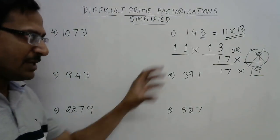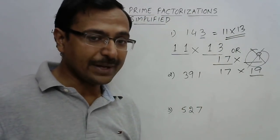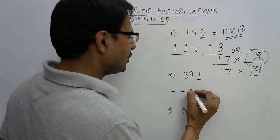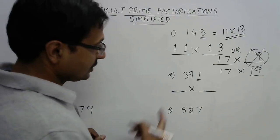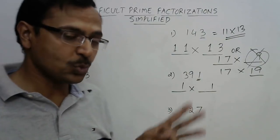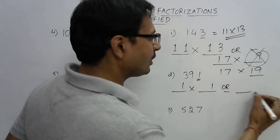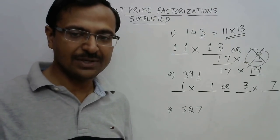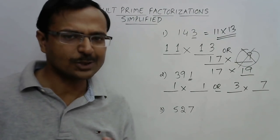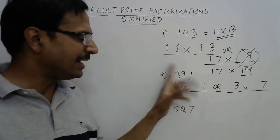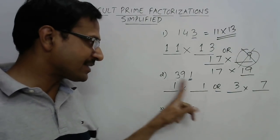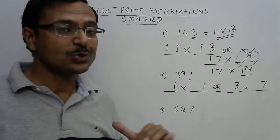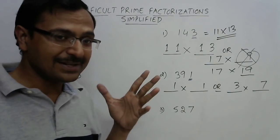Let's solve 391. The number ends with 1, so the two factor options are: both numbers end with 1 (since 1 × 1 = 1), or one ends with 3 and the other with 7 (since 3 × 7 = 21, ending with 1). For the first option, 11 × 11 = 121 which is less than 391, and prefixing 2 gives 21 which is not prime.